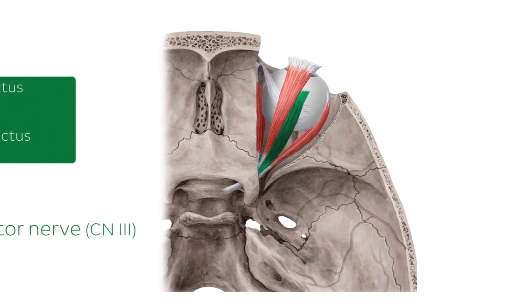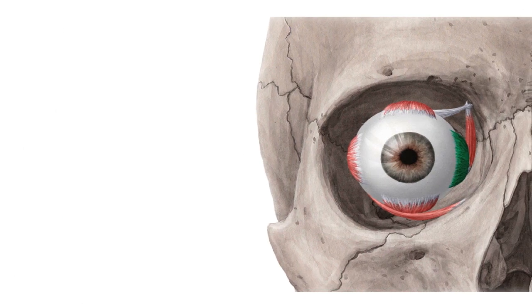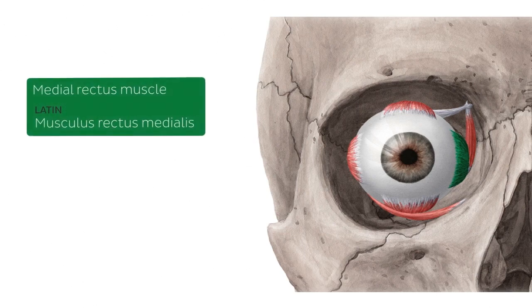We're now looking at this muscle highlighted in green from an interior view of the eye. This is known as the medial rectus muscle.